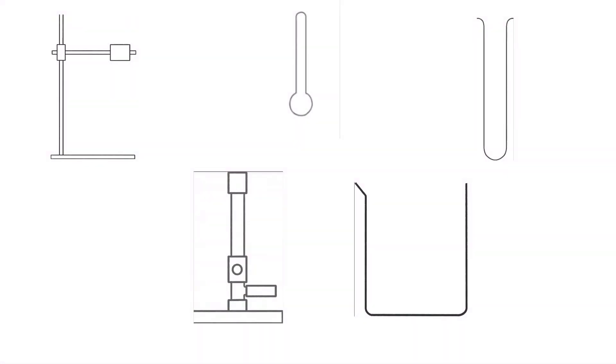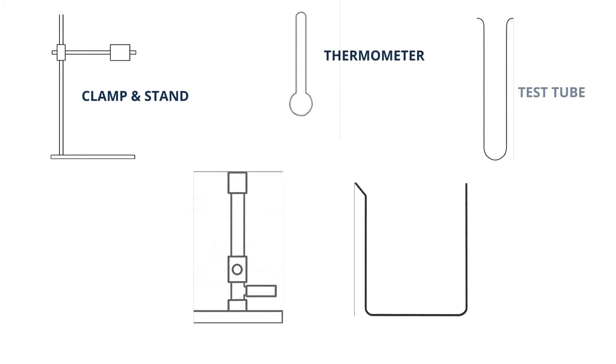Here you'll see a clamp and stand, a thermometer, test tube, beaker and Bunsen burner.